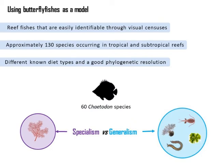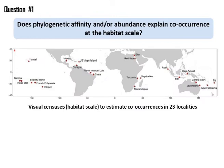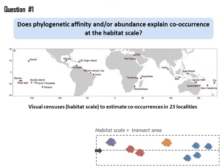For this study, we divided 60 Chaetodon species into specialist or generalist feeders to answer the question: does phylogenetic affinity and/or species abundance explain co-occurrence patterns at the habitat scale? To answer this question, we used visual censuses to estimate butterfly fish co-occurrences in 23 localities. We considered the transect area of each census as a habitat scale.